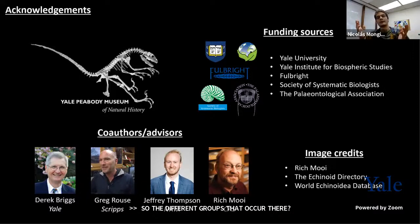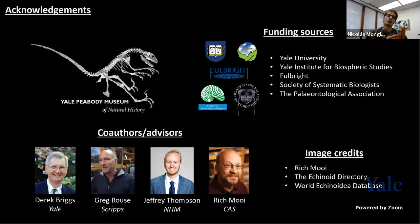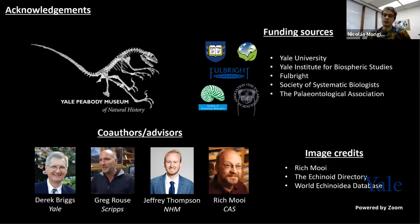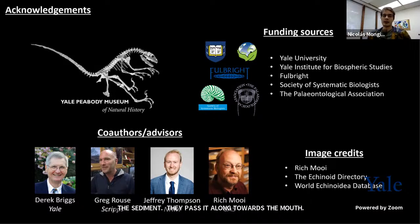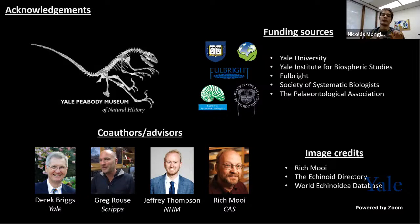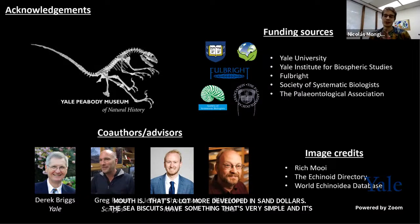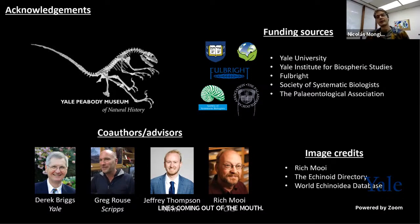Most true sand dollars, if you flip them around, have radiating sets of canals on the underside converging towards the mouth — known as a food groove system — related to the unique mechanism with which they pick particles of organic matter from the sediments and pass it along towards the mouth. That structure looks like a tree radiating from the center of the underside where the mouth is, and it's a lot more developed in sand dollars. Sea biscuits have something very simple — just lines coming out of their mouth. So whenever you find something very flat on a beach that has some sort of radiating complex pattern on the underside, that's definitely a sand dollar.